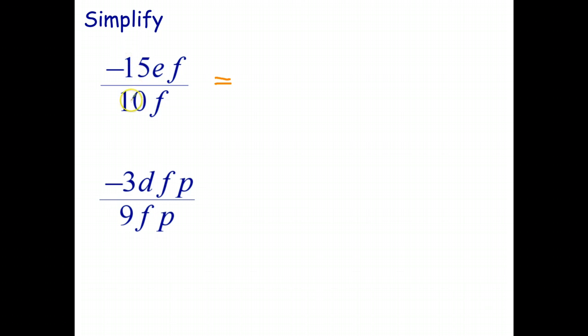Well, the common factor for those is 5. So 5 goes into 10 twice. 5 goes into negative 15, negative 3 times. So I can start by putting the negative 3 on top and the 2 on the bottom. Now, e is only one of those. So that just stays. Nothing changes. And we've got a common factor of f. So we can divide both of those by f. And that's our final answer.